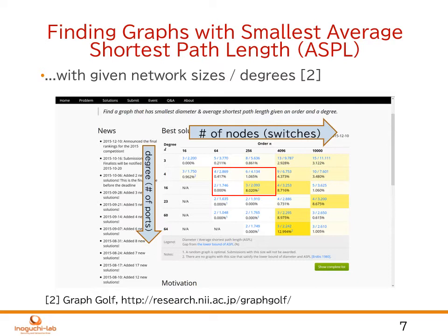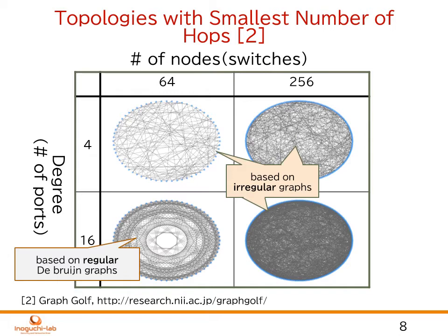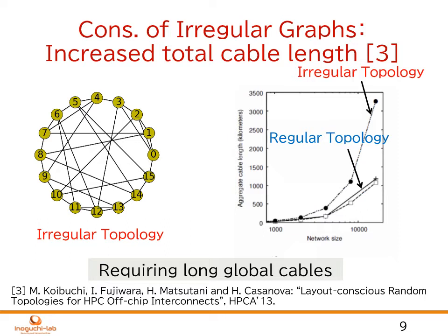This graph shows the found solutions of low-diameter topologies in the programming competition graph goal. It is revealed that most of the proposed solutions for this problem use heuristic approaches. These approaches generate irregular topologies, as shown here. The negative aspect of such irregular network topologies is that we have to use a huge number of long global cables to connect switches, and we will suffer from increased total cable lengths compared to conventional regular topologies.